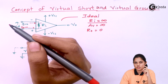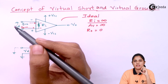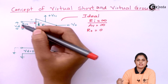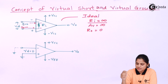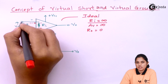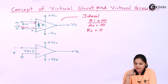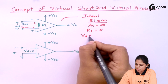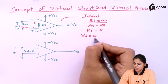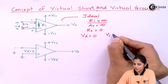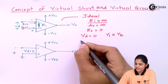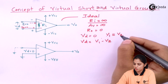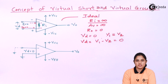If there is no current flow and no voltage across the resistance, both terminals look like they are shorted. They are not actually shorted, but they act as shorted — they are virtually shorted. That means the potential present at both terminals is the same, and if the potential is the same, Vd equals zero, which means V1 equals V2.